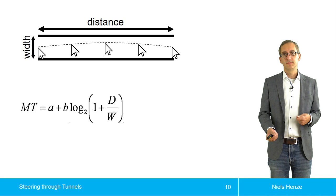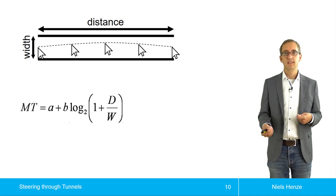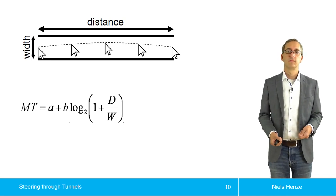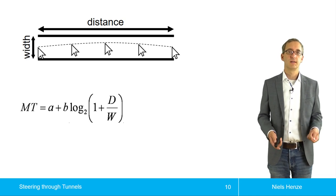So that means we have to make the task actually easier or make the model predict things for easier tasks.